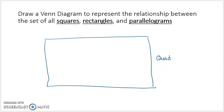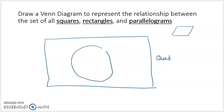You've got squares, rectangles, and parallelograms — let's think about how those are related. All squares are parallelograms, and all rectangles are also parallelograms. But there are some parallelograms that are neither rectangles nor squares — for example, a slanted parallelogram that's neither a rectangle nor a square. So amongst the set of quadrilaterals, I draw a big circle for the set of parallelograms, labeled P.